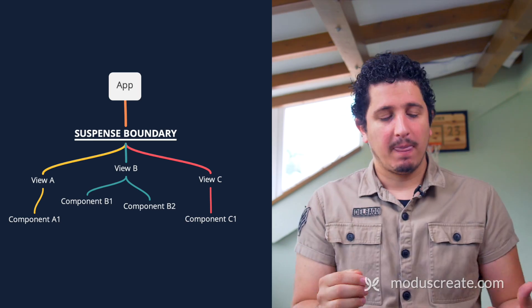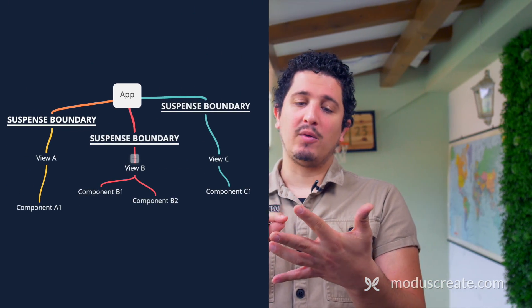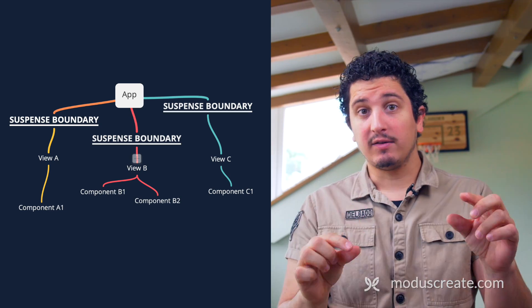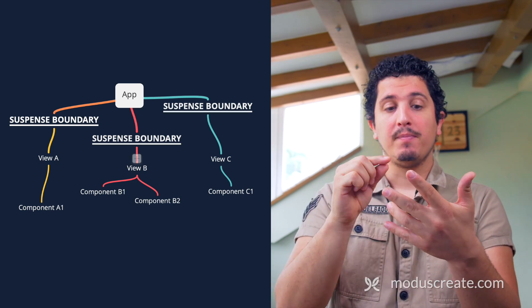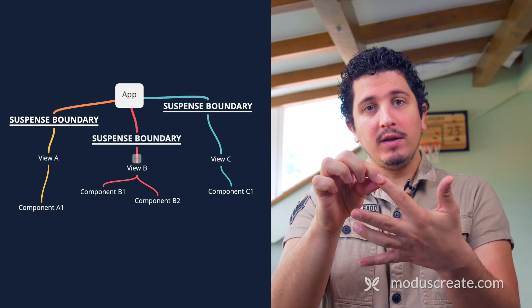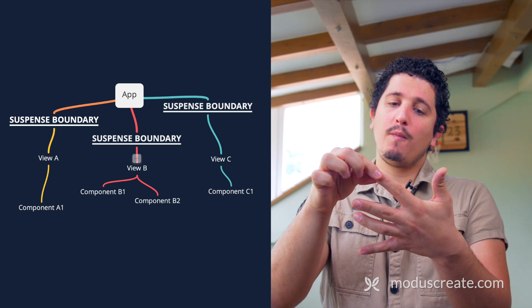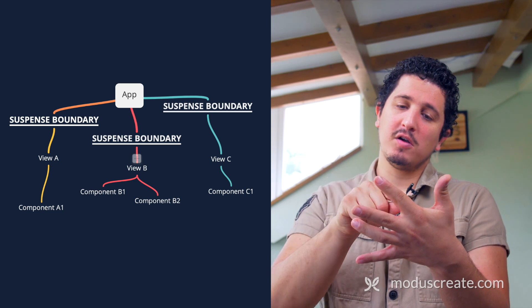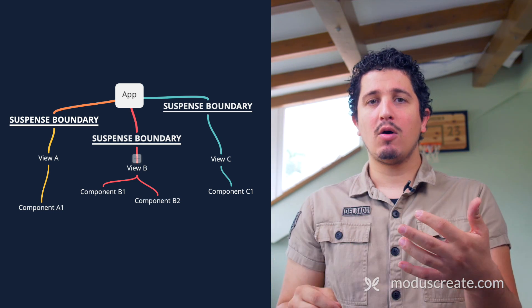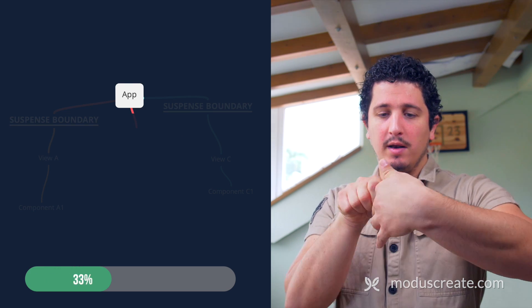So how do we fix that? We can keep one major Suspense boundary for the whole app, but then we can add sub-boundaries. So let's say every finger can be a boundary. My index finger is a boundary on its own because it has Suspense tags. I'll show you how to use Suspense tags in a bit. My nail needs to load — so the hand shows, but no finger while waiting for the fingernail to load, and then the whole hand appears.